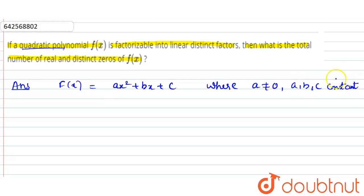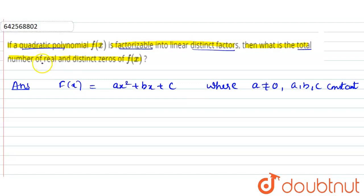The conditions are: a should not be equal to 0, and a, b, c should be constants. This is the general form of a quadratic polynomial. It is said that it is factorizable into linear distinct factors, and we have to find out the total number of real and distinct zeros. We'll understand this using an example.